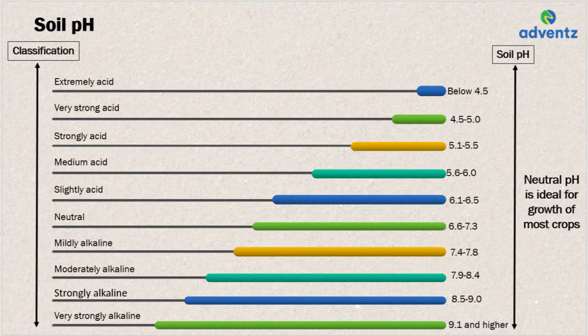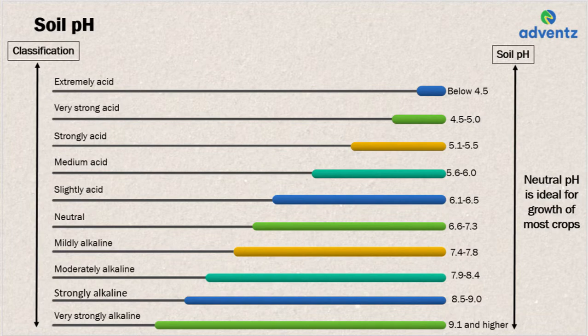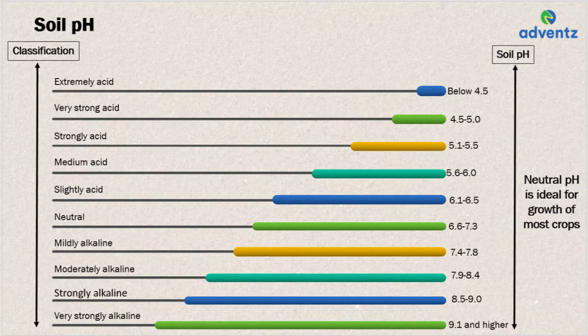When the soil pH is below 4.5, the soil is classified as extremely acid. When the soil pH is between 4.5 to 5, it is very strongly acidic. For pH between 5.1 to 5.5, it is strongly acidic. When soil pH is between 5.6 to 6.0, it is medium acidic. When pH is between 6.1 to 6.5, it is slightly acidic. For pH between 6.6 to 7.3, the soil is neutral.